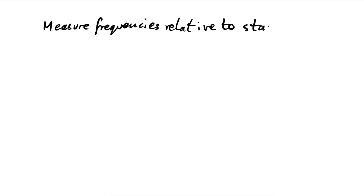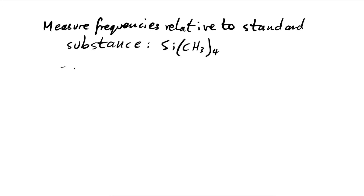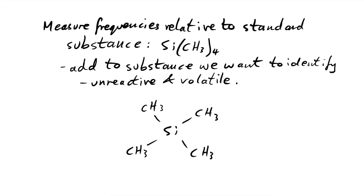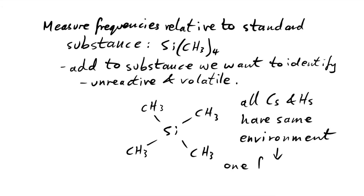In true chemistry fashion, it's not enough for us to measure these different frequencies in hertz — we have to do it differently. So what we do is measure the frequencies relative to a standard substance, and that is tetramethylsilane (TMS). It's unreactive and volatile, so we can remove it easily. But the most important thing is that it only absorbs one frequency, because this molecule is completely symmetrical whichever way you cut it — all the carbons and all the hydrogens have the same environment.